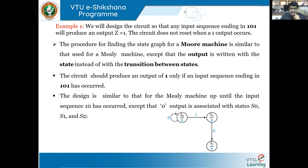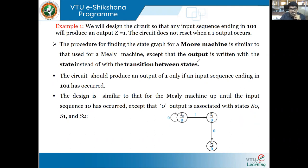In the Mealy sequential network, if I'm moving from state S0 to state S1, my output was specified during the transition between states. Whereas in the Moore machine, the output is specified within the state. If the output is defined outside the state and between the transitions, that means it is Mealy. If I specify the output within the state, that becomes Moore. That is the major difference between Mealy and Moore.